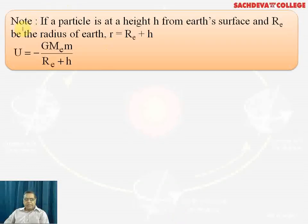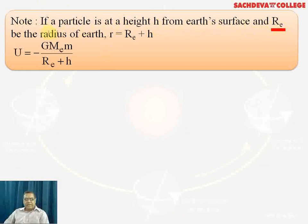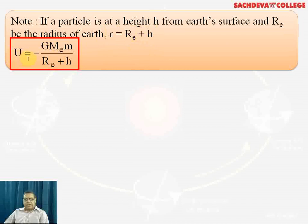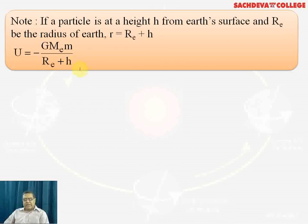If a particle is at height h from the Earth's surface and R_e is the radius of the Earth, then the net distance of the body from the center is R_e + h. The gravitational potential energy formula becomes U = -GM·m / (R_e + h), where M_e is the mass of the Earth and m is the mass of the body.